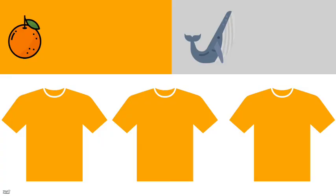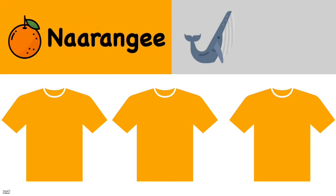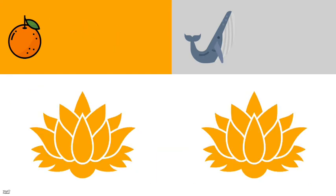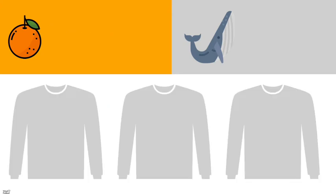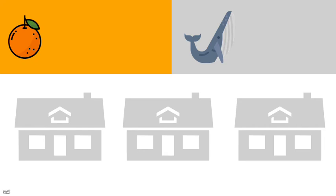Now we're going to do more practice problems, but there's going to be no words. So if you've been reading the words, now we're going to be testing your memory to see if you remember them without reading them. So here we have those orange shirts. What's the color orange in Hindi? Narangi. And look at these orange flowers. What's the color orange in Hindi? Like we just said, narangi. And look at these gray shirts. What was gray in Hindi again? Saleti. And look at these gray houses. What was gray in Hindi? Saleti.